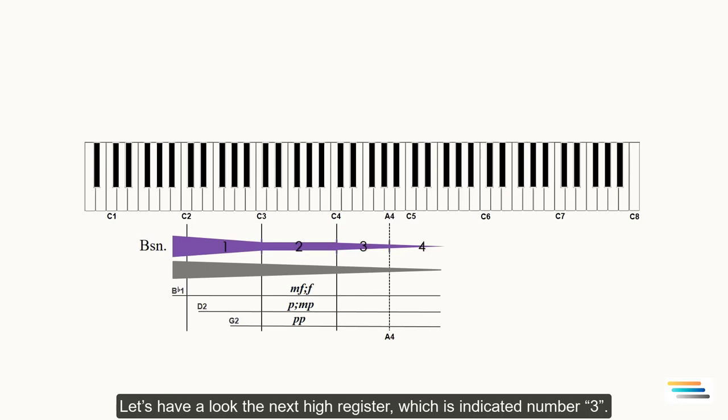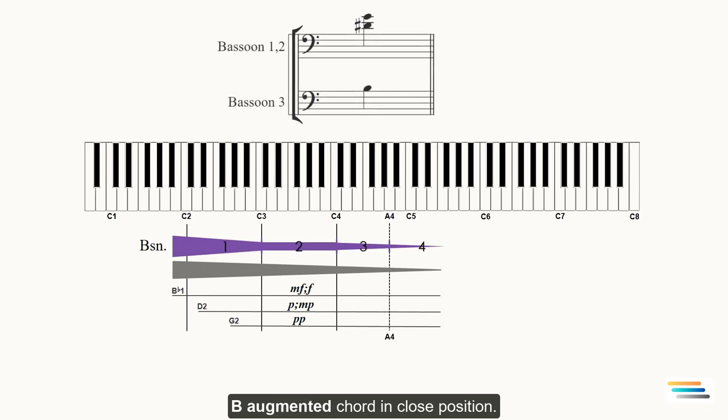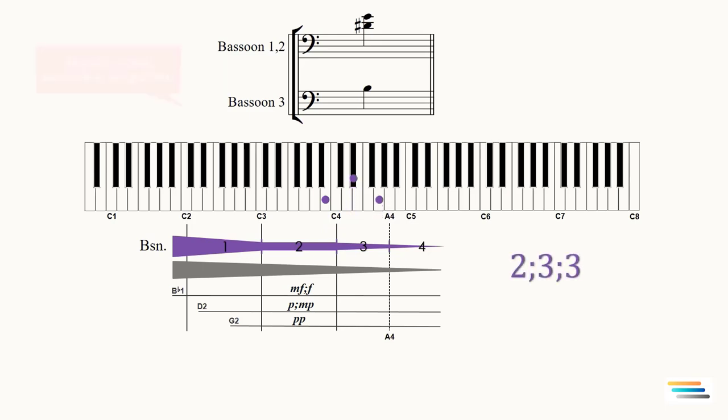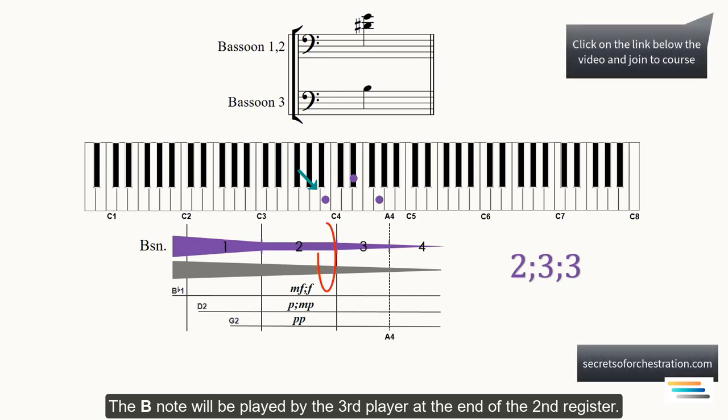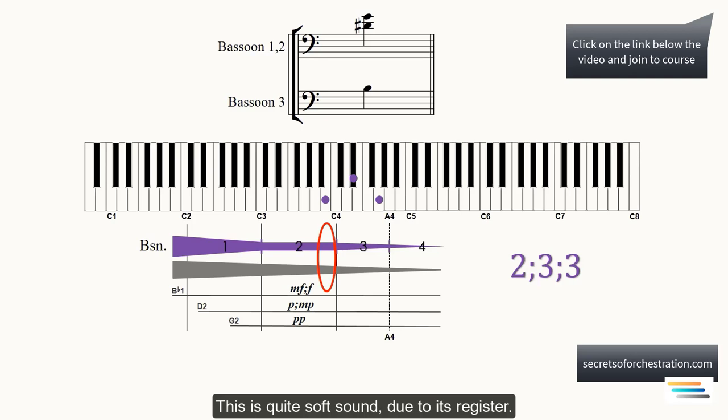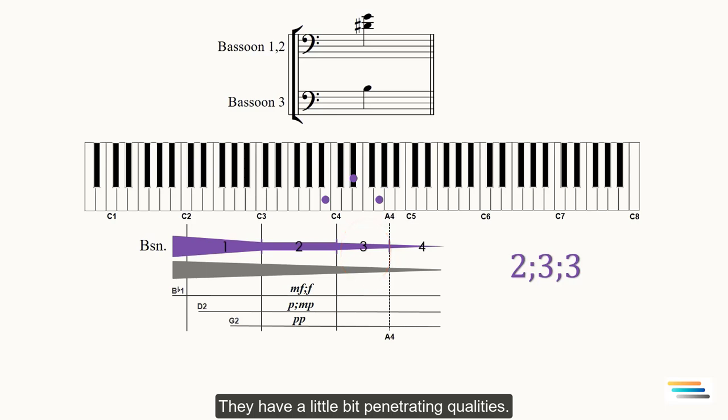Let's have a look at the next high register which is indicated number 3. B augmented chord in close position. The B note will be played by the third player at the end of the second register. This is quite soft sound due to this register. D♯ and G are in the third register. They have a little bit penetrating qualities. But nevertheless, since the three notes - B, D♯, G - are in close position and will be played in adjacent registers, this chord is well balanced. All dynamic markings are possible.